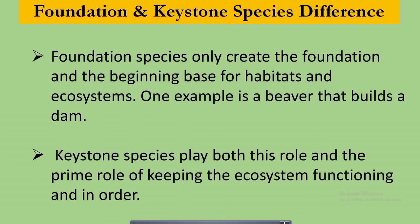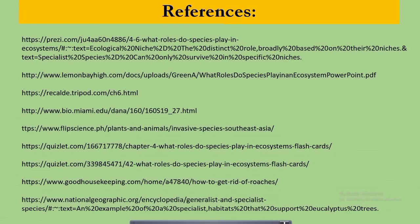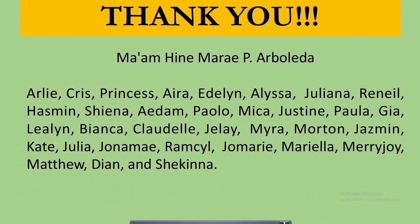That's the end of my report. In conclusion: populations evolve when genes mutate and give some individuals genetic traits that enhance their ability to survive and produce offspring with these traits — this is known as natural selection. Human activities are decreasing the Earth's vital biodiversity by causing the extinction of species and disrupting habitats needed for the development of new species. Lastly, each species plays a specific ecological role — what we call an ecological niche — in the ecosystem where it is found. Thank you, everyone. Have a nice day and God bless.